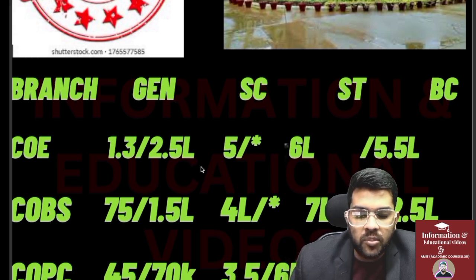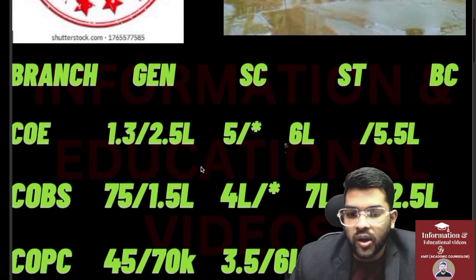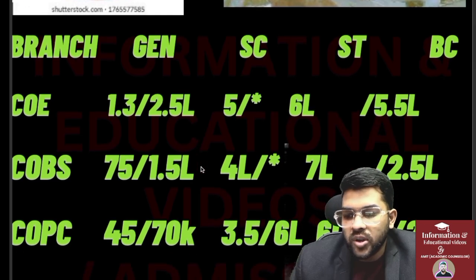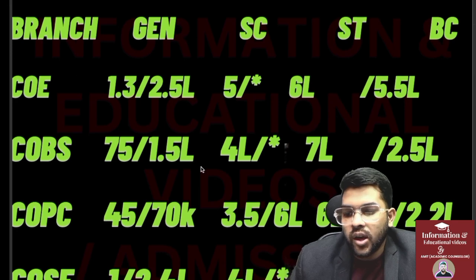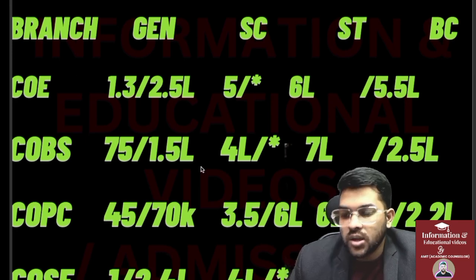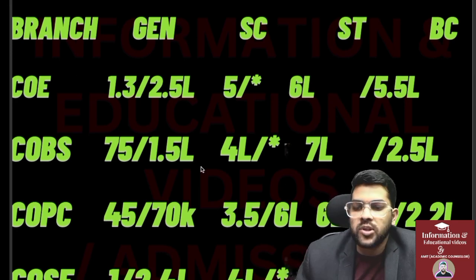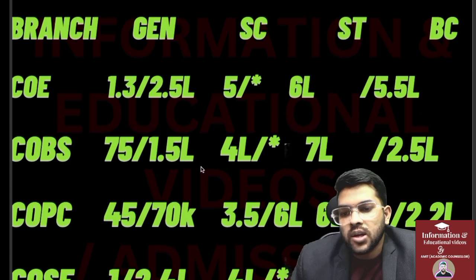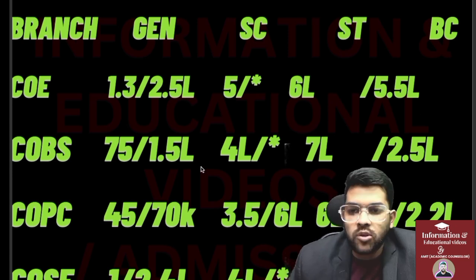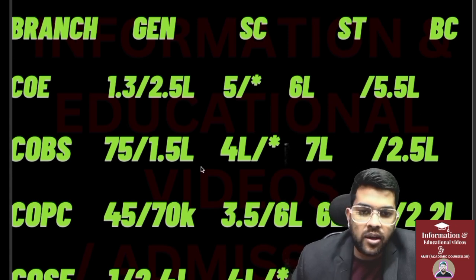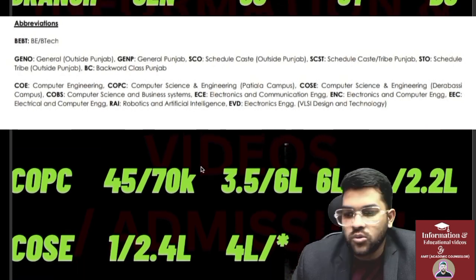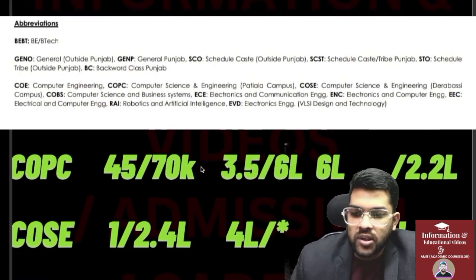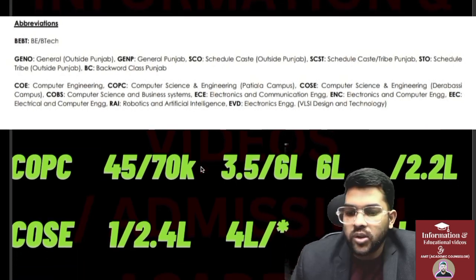For COBS, the cutoff is 75,000 and 1.5 lakh for general; SC 4 lakh; ST 7 lakh; BC 2.5 lakh. For COPC, 45,000 and 70,000 for general — other state and homestead respectively. For SC, 3.5 lakh and 6 lakh; ST 6 lakh; BC 2.2 lakh. For COSE, 1 lakh and 2.4 lakh for general.